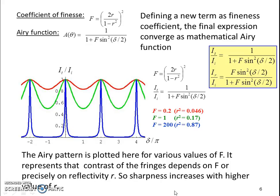The term can be abbreviated by defining a new term called the finesse coefficient, which is 4R by (1 minus R square) whole squared, and is called the coefficient of the finesse.